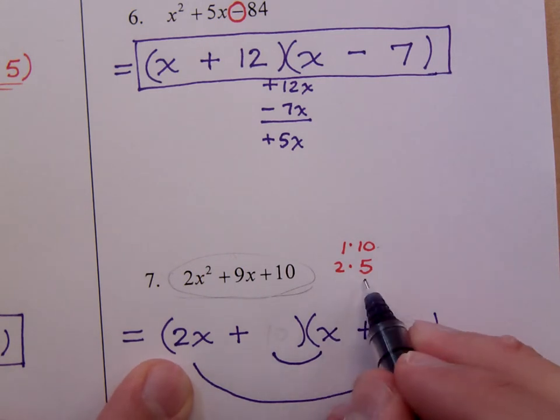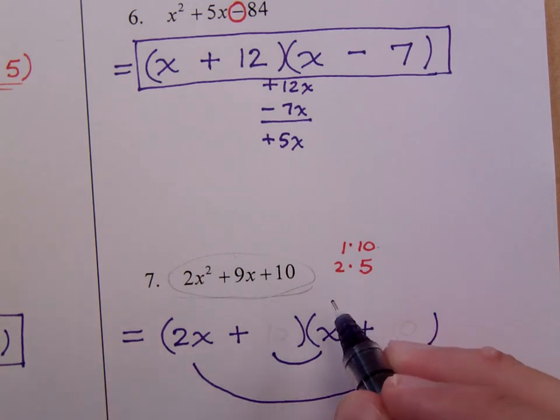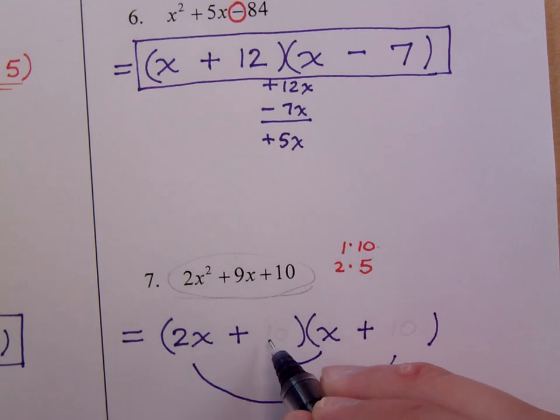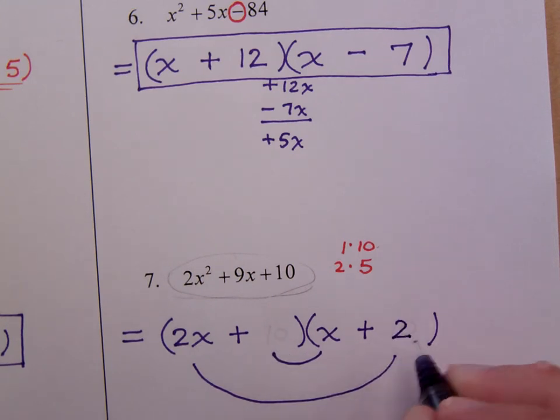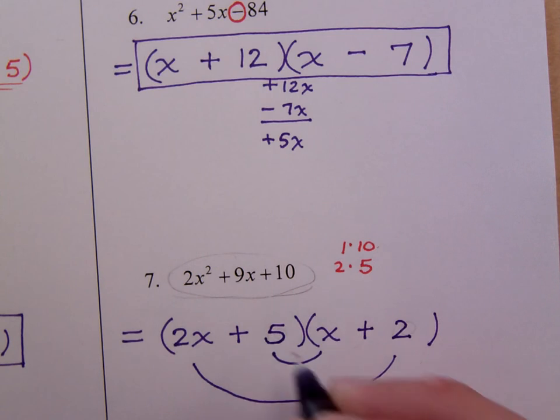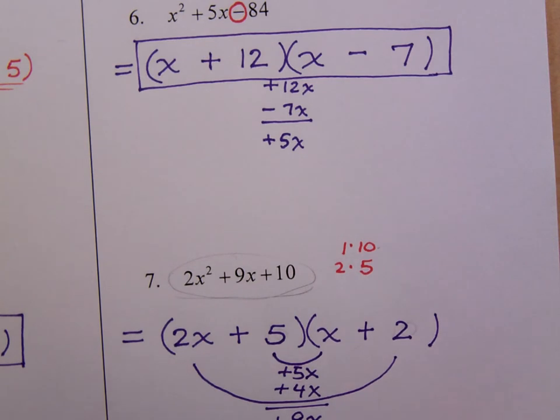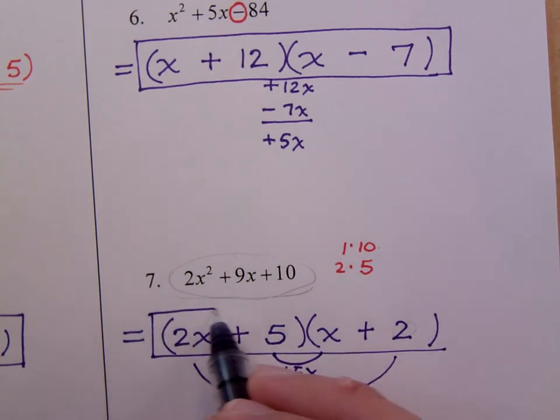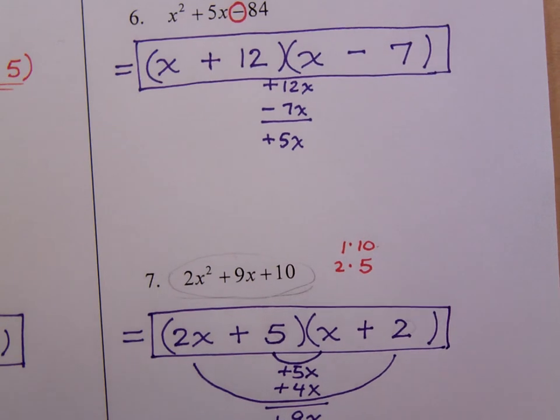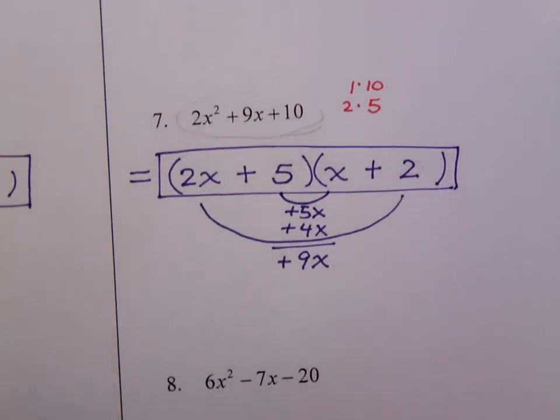So that leaves me with 2 and 5. I just said you can't have common factors here, so the 2 cannot go here, and it must go here, which leaves this as the only place for the 5. When you check your work, you get plus 5x. On the outside is plus 4x, and there's the plus 9x that we so desperately needed. So everything here checks out. Notice what I said, it checks out. We are checking our work. Don't get lazy.